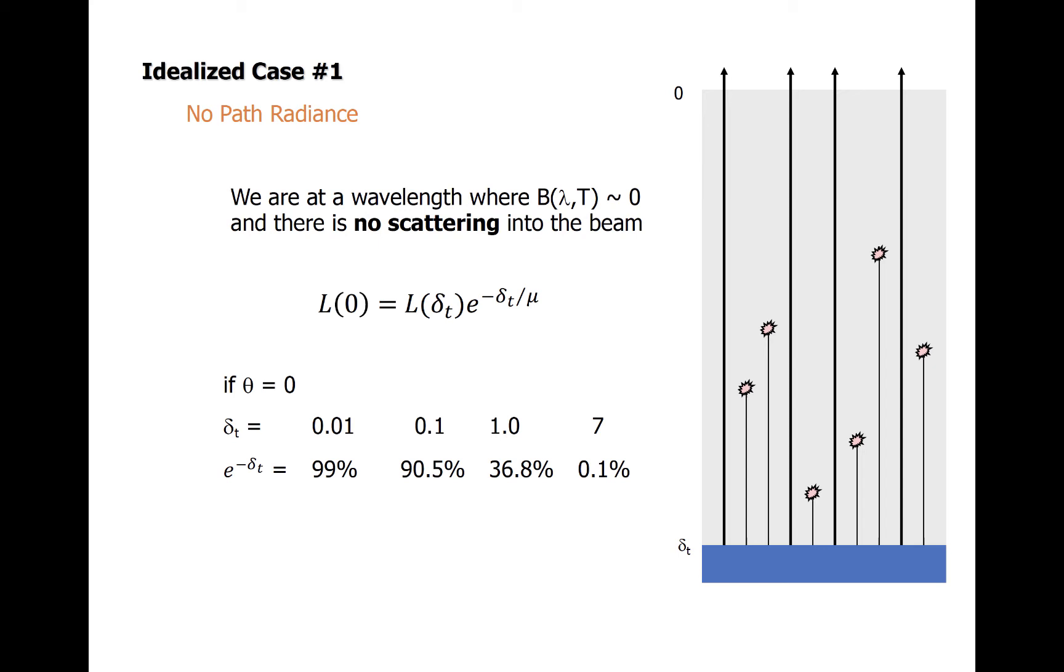If we consider the vertical path, an optical depth of one corresponds to a direct transmissivity of about 37 percent. High optical depths correspond to very low transmissivity. An optical depth of about 4.5 corresponds to a direct transmissivity of one percent. Such optical depths are quite common at wavelengths that are efficiently absorbed or scattered. For example, clouds are highly opaque to visible light, and they commonly have optical thickness of greater than one.